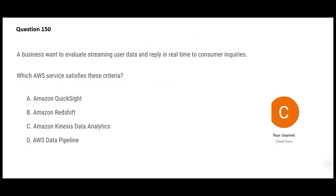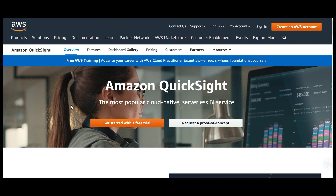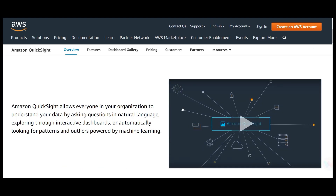For the last question — when I see the words 'streaming' and 'real time,' I immediately think of Kinesis or SQS. SQS is not in the options, but Kinesis is — so I'll select Kinesis. QuickSight is a business intelligence service like Tableau or Cognos used for creating dashboards and reports; it has nothing to do with real time.